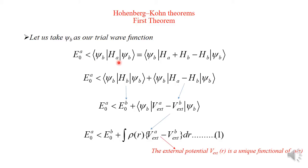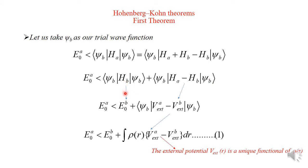Let us take ψ_B as our trial wave function. That means E0A is less than the expectation value of H_A with respect to the trial wave function ψ_B. H_A can be rewritten by adding and subtracting H_B: that is ⟨ψ_B|H_B|ψ_B⟩ plus ⟨ψ_B|(H_A − H_B)|ψ_B⟩. The expectation value of H_B equals E0B, the ground-state energy of wave function ψ_B.